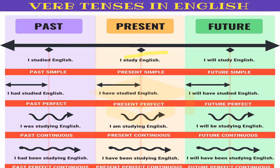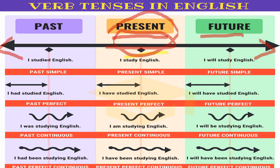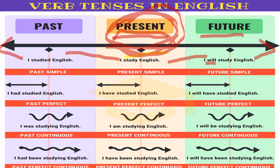Now let's understand with another example. Present is in the middle — it's happening now. Past has already happened before. Future is yet to come. We are living in the present tense. Simple present: 'I study English.' Past tense: 'I studied English' — 'studied' is the past form of 'study.' Note the spelling change. Future tense: 'I will study English' — using 'will' because I am certain and determined.